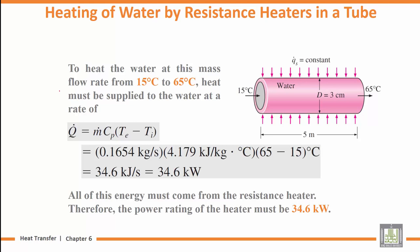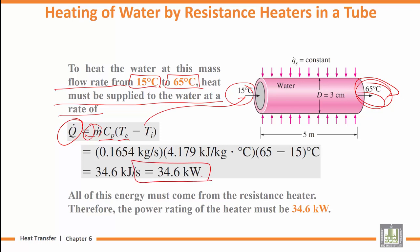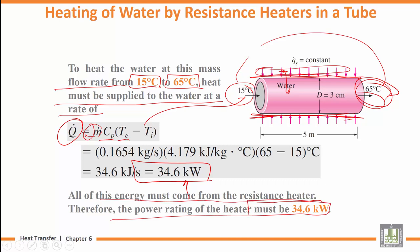To heat the water at this mass flow rate from 15 to 65 degrees, heat must be supplied at a rate of Q equals m dot times Cp times delta T. This gives us 34.6 kilowatts. All this energy comes from the heater. Since the heater is well insulated from outside, all the heat goes into the water. Therefore, the power rating of the heater must be 34.6 kilowatts.